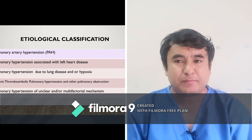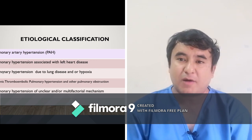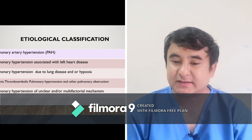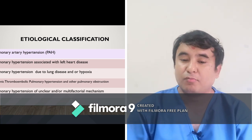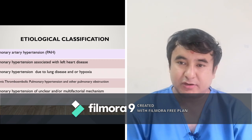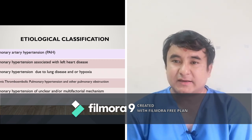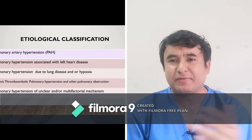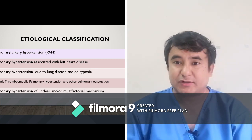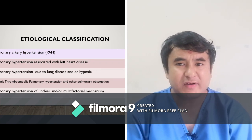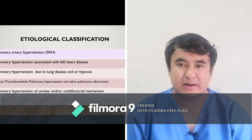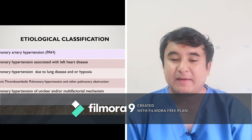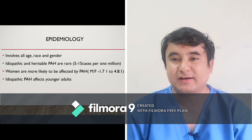Group three is pulmonary hypertension due to lung disease — patients with COPD and ILD who develop cor pulmonale fall in this category. Group four is chronic thromboembolic pulmonary hypertension, which is a rare condition. Group five is pulmonary hypertension of unclear or multifactorial mechanism — despite working up for many etiologies, sometimes it is very difficult to identify the cause, and those patients are kept in category five.